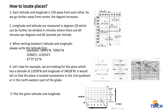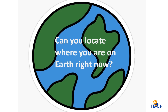How to locate places: by combining longitude and latitude, any location can be pinpointed. This is how you can locate places using latitude and longitude. This may be an overload of information — you can take a pause in this portion of the video. Can you now locate where you are on earth? I hope this video has helped you.